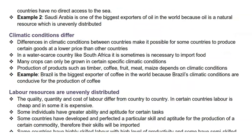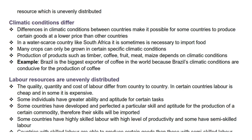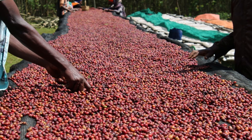The next supply reason is that climatic conditions differ. Differences in climatic conditions between countries make it possible for some countries to produce certain goods at a lower price than other countries. In a water-scarce country like South Africa, it is sometimes necessary to import food. Many crops can only be grown in certain specific climatic conditions. Production of products such as timber, coffee, fruit, meat, and maize depends on climatic conditions. For example, Brazil is the biggest exporter of coffee in the world because Brazil's climatic conditions are conducive for the production of coffee.